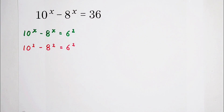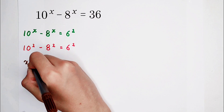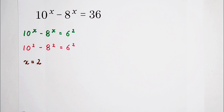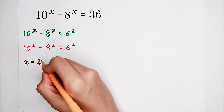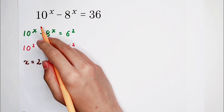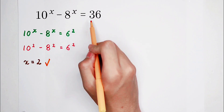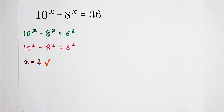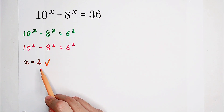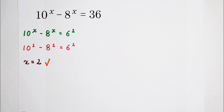So we get that x equals 2 is a solution of this equation, since 10 squared minus 8 squared equals 36, which is 6 squared. However, we don't know if it's the only root. So we have two choices: find other roots, or prove that x equals 2 is the only root. Let's start with proving.